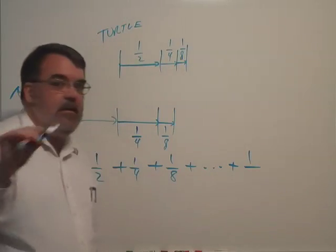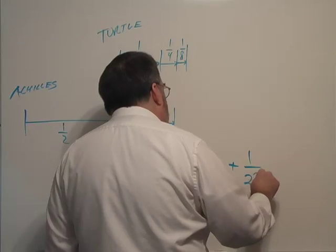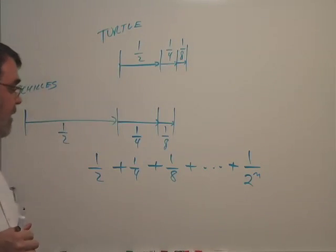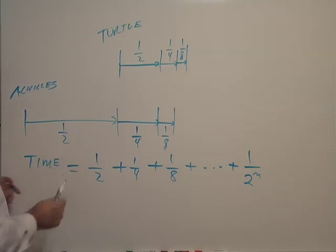And after N number of stages, generic number N, after N number of stages, that's how much time has elapsed. Now why does that work?